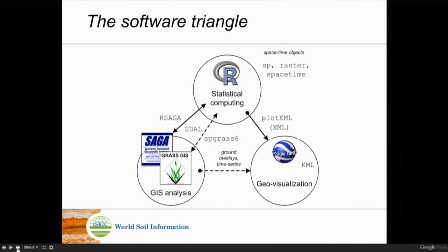In SAGA GIS you can look at actual pixel values when you zoom in — very nice — and query spatial objects graphically. That's my triangle. Of course you have to find your own combination, but that's mine. I use this for big-scale projects — five-year projects with really large data, lots of geographical and statistical analysis. It is operational — you can do serious work with this software.